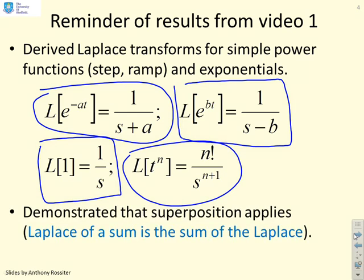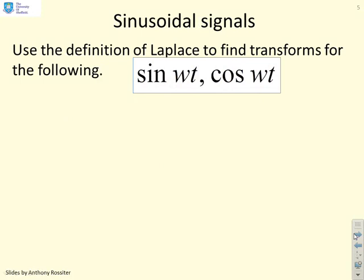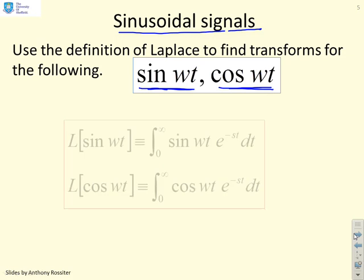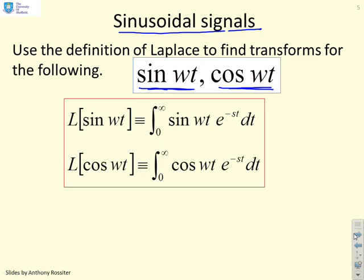We also demonstrated the superposition rule. This video will now introduce sinusoidal signals — sin(ωt) and cos(ωt). How might we find the transforms for those? The simplistic route is to plug them into the definition: the Laplace of sin(ωt) is the integral from 0 to infinity of sin(ωt) e^(−st) dt, and the Laplace of cos(ωt) is the integral from 0 to infinity of cos(ωt) e^(−st) dt.